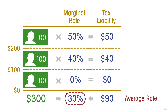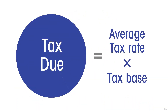So now we understand the difference between the marginal tax rate and the average tax rate. Armed with this information, we can now discuss efficiency. The tax that is due is the average tax rate multiplied by the tax base.